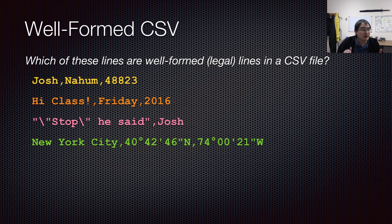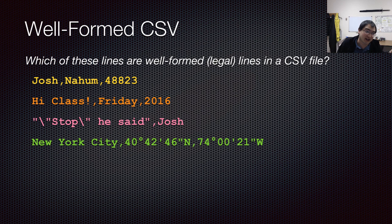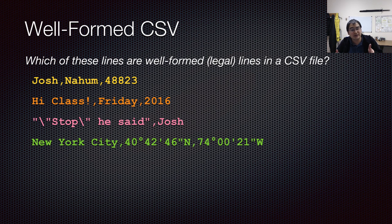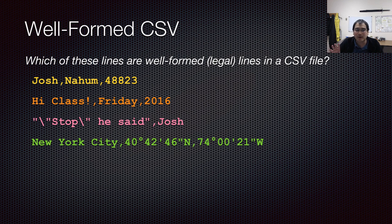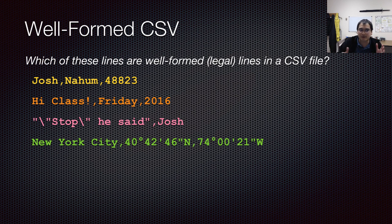Then you have a field with backslash-double-quote notation — 'stop, he said,' comma, 'Josh'. This is probably not legal. The way it gets parsed is you have a string which is just a slash character, then 'stop', then a backslash, then another string 'space he said', then 'Josh'. Most CSV parsers would not be happy with string fields stuck right against each other without commas separating them. You can't escape double quotes with a backslash — you escape double quotes with another double quote. It's an easy mistake to make.